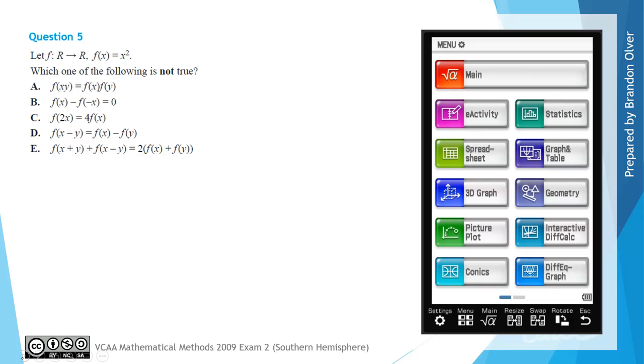For question 5 we have let f be the function with a domain of all real numbers with the rule f of x equals x squared, and we're asked which of the following is not true. It's important that it says not true, which means four of these options will be correct and one will be incorrect. We're now going to use a calculator to test all of these options.